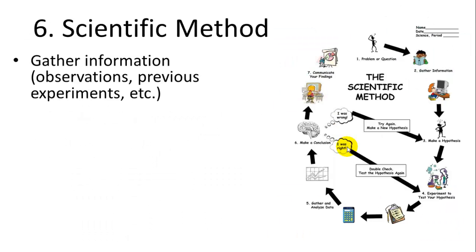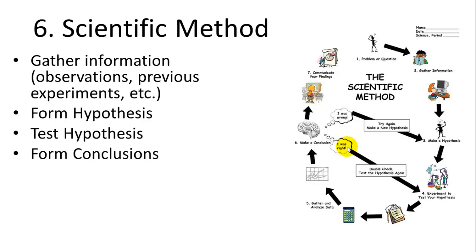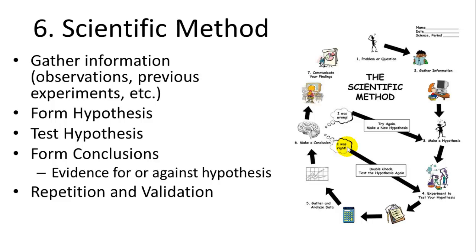That is essentially the basics of the scientific method, which isn't quite as simple as the step-by-step process you may have learned in elementary or middle school. First you need to gather information, form a hypothesis, test that hypothesis, and form conclusions from your test. Those conclusions are generally that you have evidence for or against a hypothesis. You don't really ever prove that something is true through one test. Vital to that also is this idea of repeating your experiment and having the same results over and over — repetition and validation.